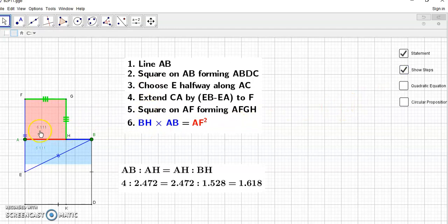Well, one, you draw the line AB, then you draw a square on AB, this square here, this big square, then you choose point E halfway along AC, and then you extend CA to F by this distance, by this particular distance, which is the length of B minus E, A, so that this blue line here is equal to this blue line. And then you take a square on AF, or rather AH, you take a square on AH to form this square.